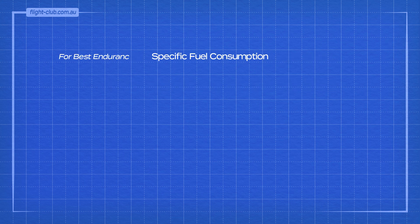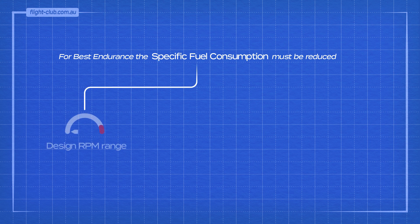For best endurance, the specific fuel consumption must be reduced. This can be done by increasing engine RPM to the design RPM range, which is high — all the way up to 98% of the maximum RPM. Increased engine RPM does increase fuel flow, but it also increases thrust by a greater amount, resulting in an overall decrease in the specific fuel consumption ratio, which is good for endurance.